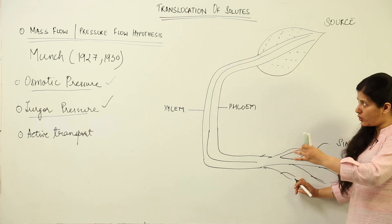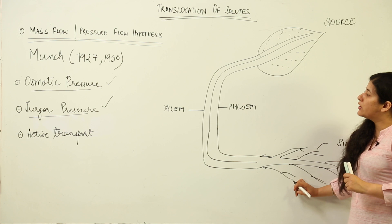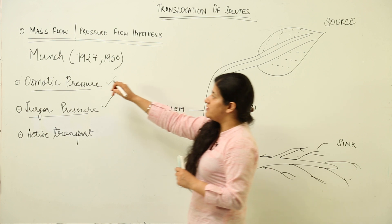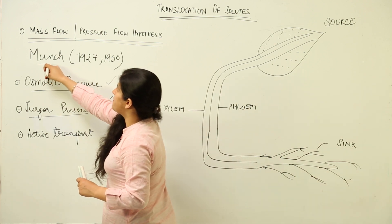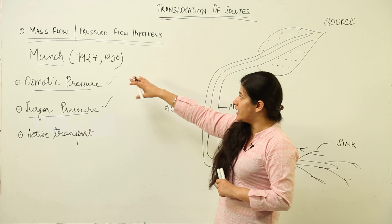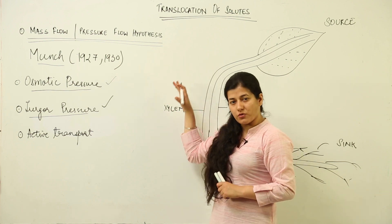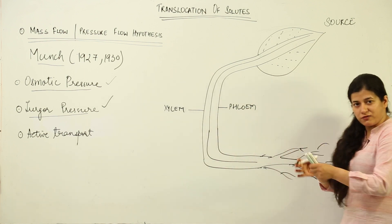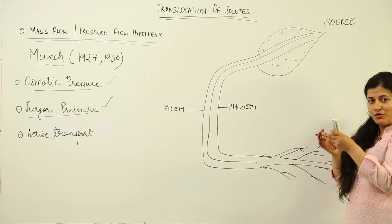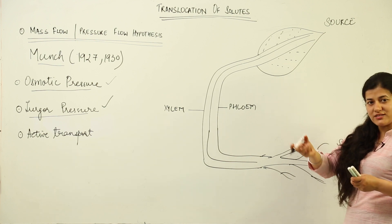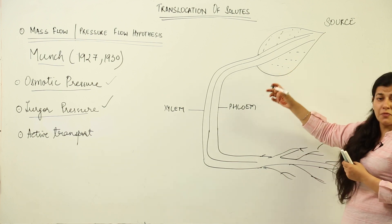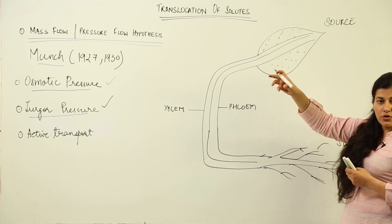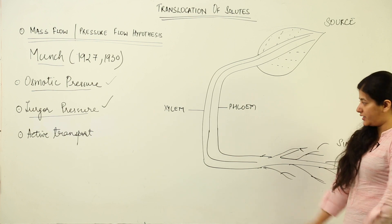Now we have to see how that flow is generated. This hypothesis was proposed by Mr. Münch — we call it the Münch Mass Flow Hypothesis — around the 1930s. He concluded that it is the mass flow or pressure flow generated within the phloem sieve tubes that creates a turgor pressure difference, and that mass flow is responsible for carrying the solutes along with it.